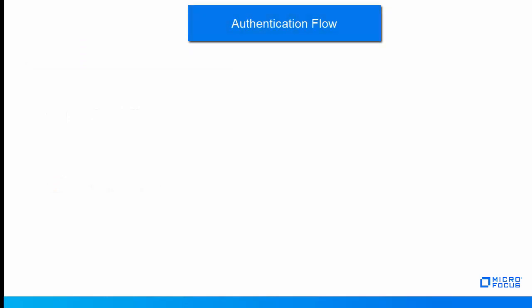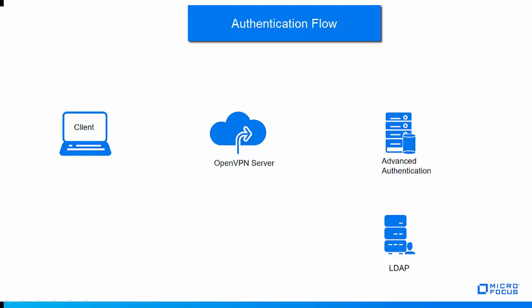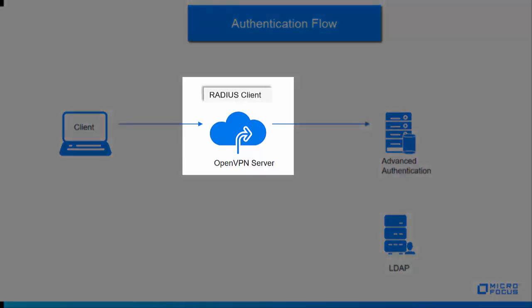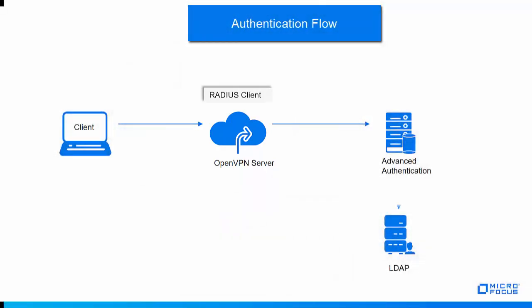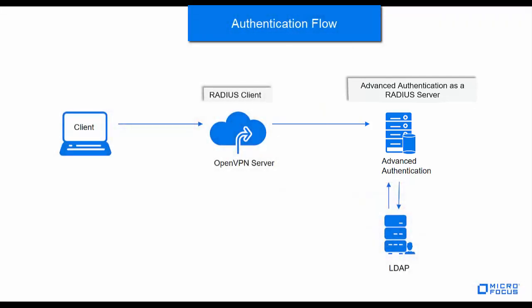Let us now look into the authentication flow. Authentication is initiated at the OpenVPN client, which contacts the OpenVPN server. The OpenVPN server then contacts the Advanced Authentication server, acting as the RADIUS client. Advanced Authentication fetches the details from the LDAP repository, acting as the RADIUS server, and passes the details back to the client. The multi-factor authentication is then completed on the OpenVPN client.